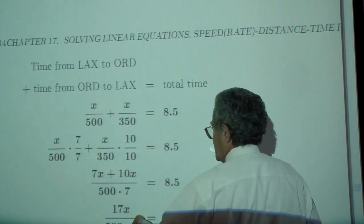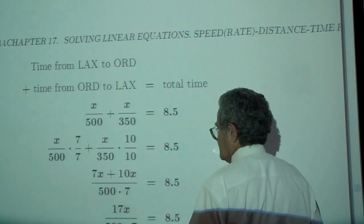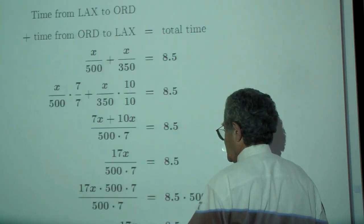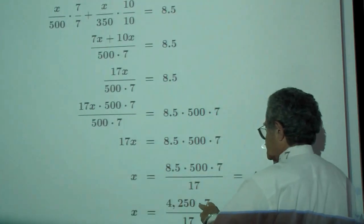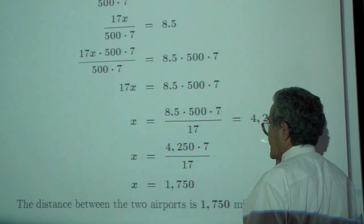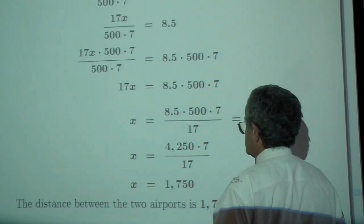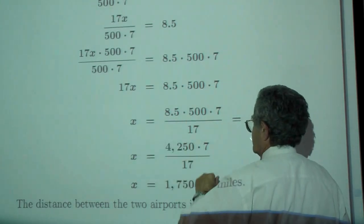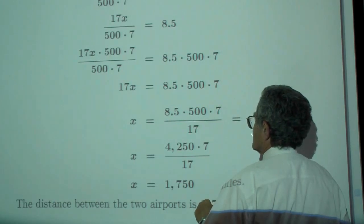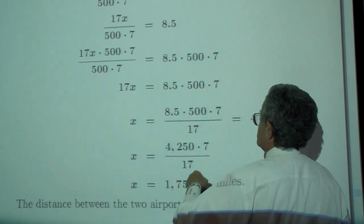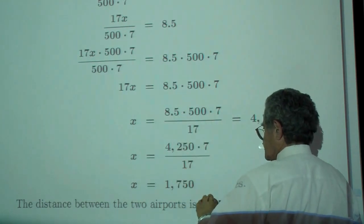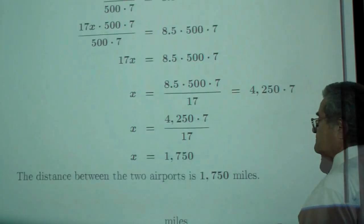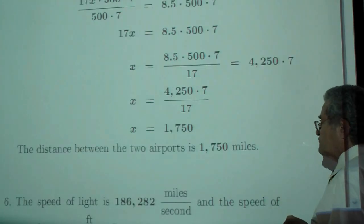So you have a common denominator, least common denominator 500 times 7, multiplied by the common denominator, divided by 17. 17 goes into 85 exactly 5 times, so 5.5. I multiply these two and I'm dividing by 17, which gives me 1750. So the distance between the two airports is 1750 miles.